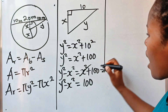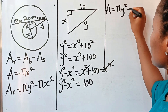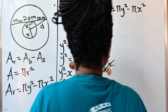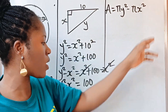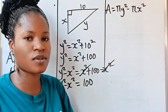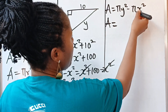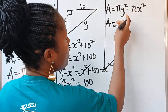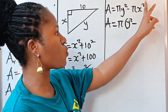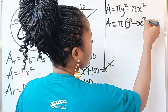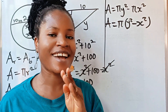Now let's go back to our formula. Remember that the area we are looking for is equal to π y squared minus π x squared. Let us factorize — we bring out π, which is what they have in common. π y squared divided by π gives us y squared, minus π x squared divided by π gives us x squared. So our area is equal to π multiplied by (y squared minus x squared).